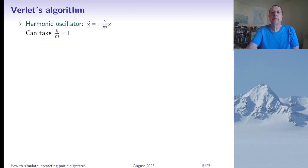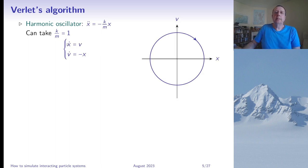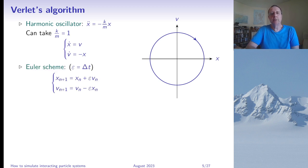Now how do we simulate this equation? Take the harmonic oscillator in one dimension: assuming k/m = 1 by rescaling time, we write it as a system of two first-order ODEs: x-dot equals v, and v-dot equals minus x. Solutions rotate at constant speed on a circle in phase space. The simplest numerical scheme is the Euler scheme, where we approximate the derivative by [x(t+Δt) − x(t)]/Δt, giving the recurrence: x_{n+1} = x_n + ε·v_n and similarly for velocity.